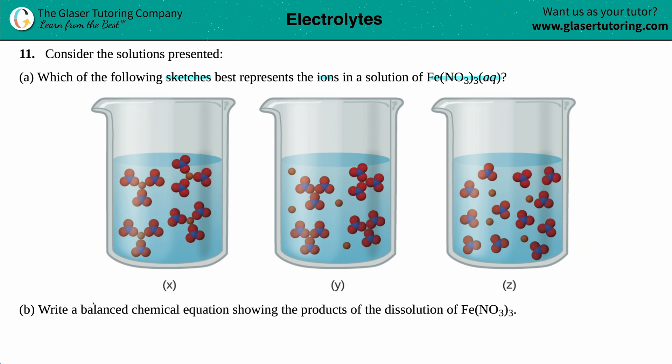Which of the following sketches best represents the ions in a solution of Fe(NO₃)₃ aqueous? And then for letter B, it says write a balanced chemical equation showing the products of the dissolution of Fe(NO₃)₃.